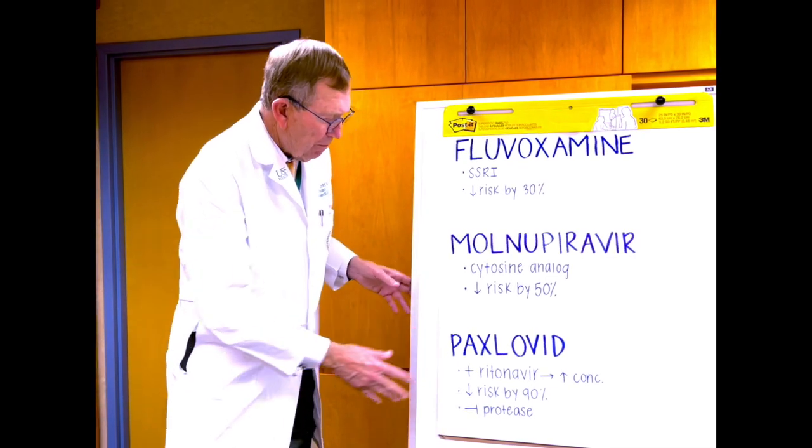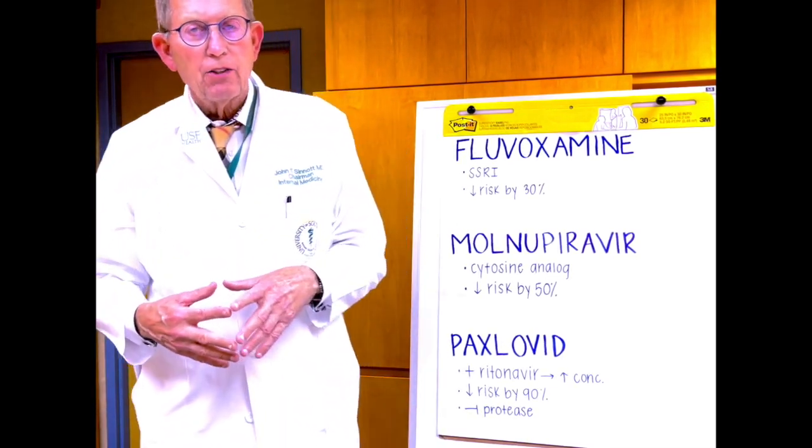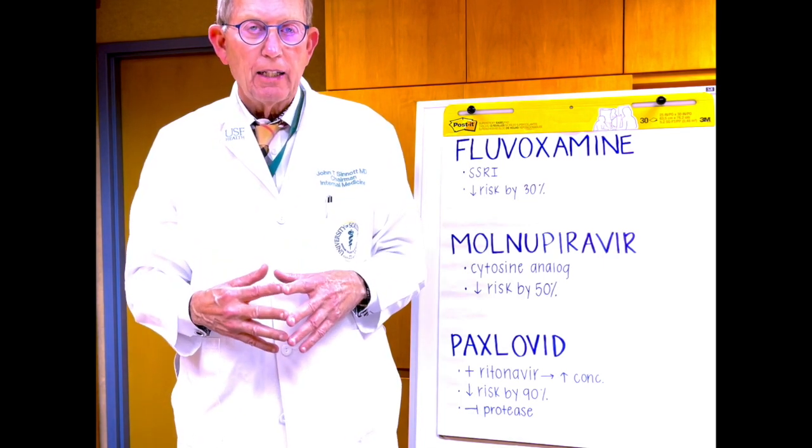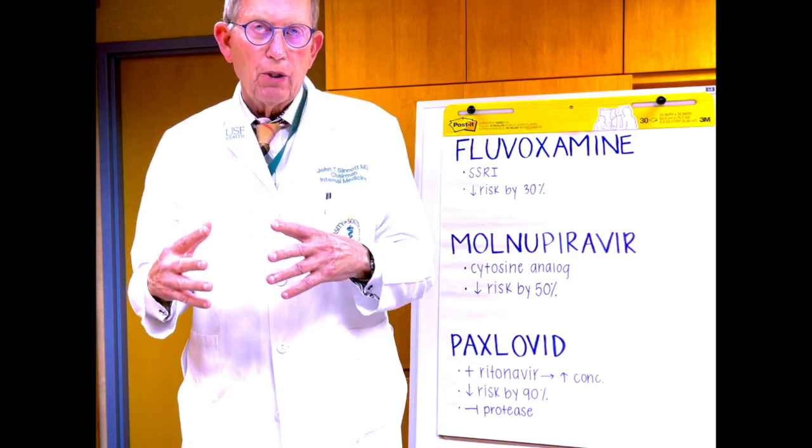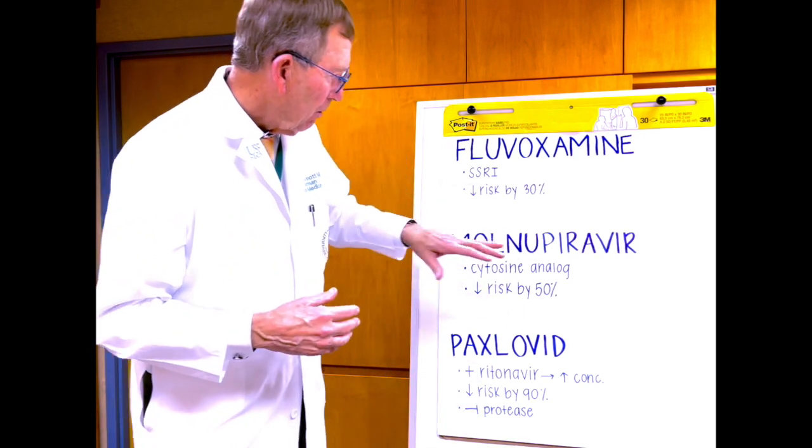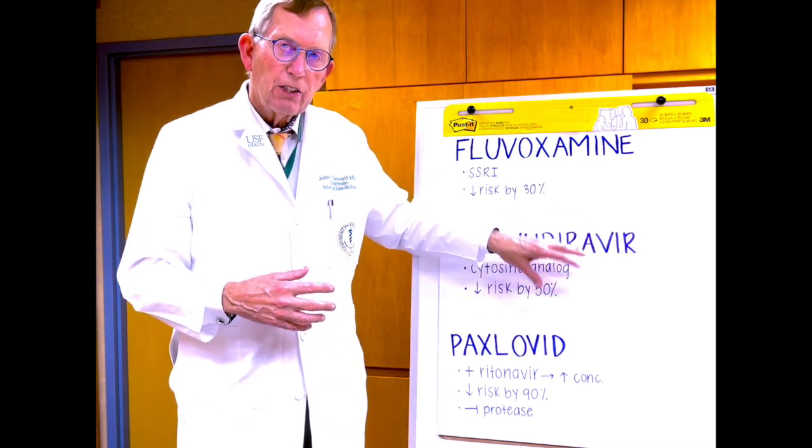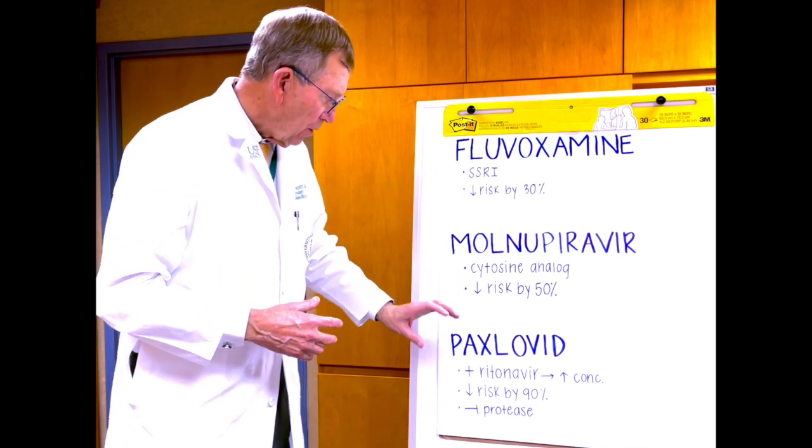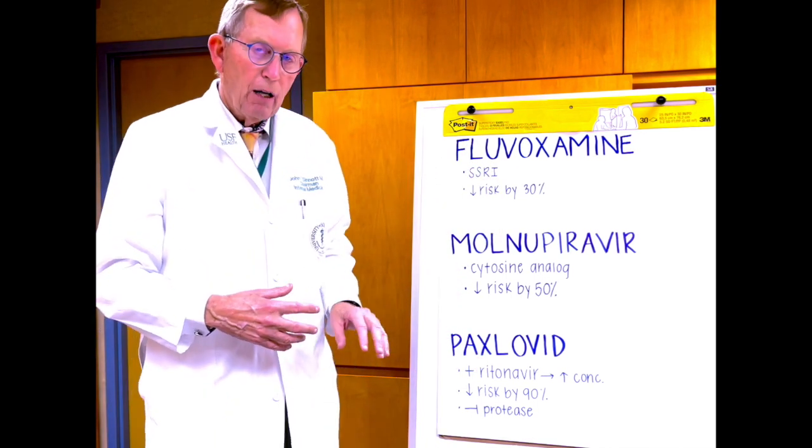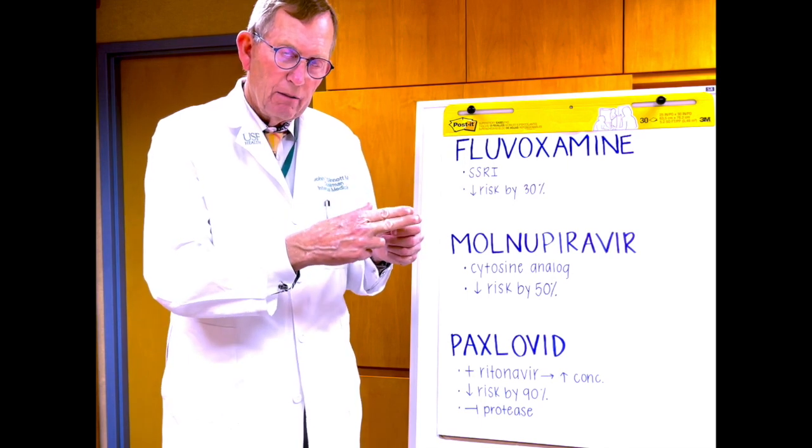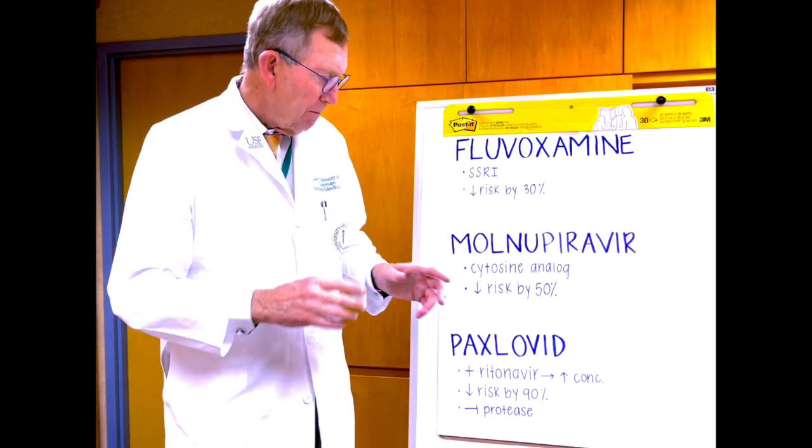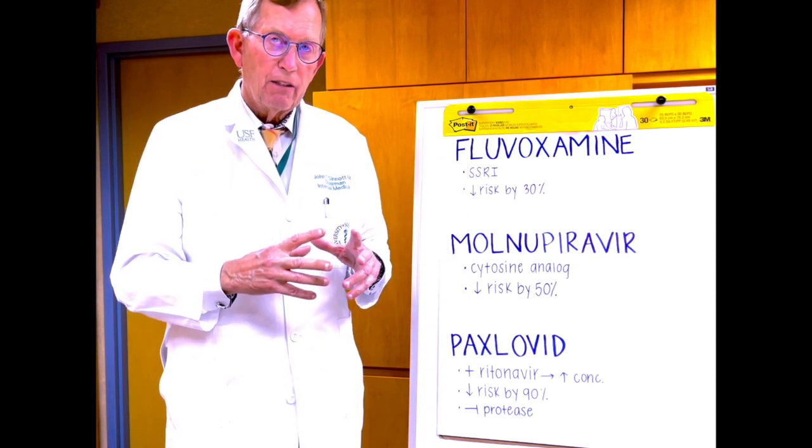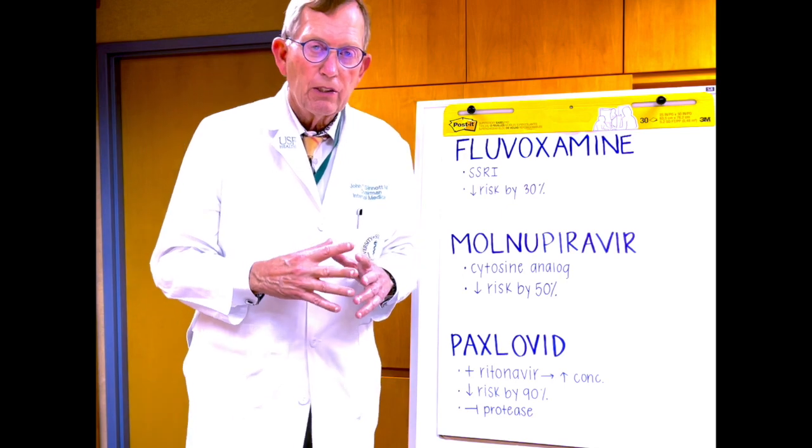Finally, Paxlovid, a product of Pfizer, it's 90% effective at preventing hospitalization and death. It interferes with a protease. Now, Molnupiravir interferes at the very beginning when the RNA is being put together. On the other hand, a protease has to snip the RNA to fit it into the virus. This inactivates that protease and you can't put that much RNA in a virus, so the virus is not reproduced.